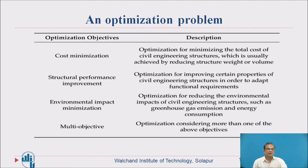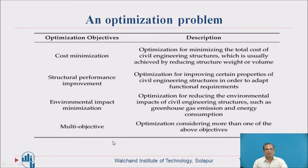There are different optimization objectives. Structural performance improvement is one more objective of optimization, under which optimization for improving certain properties of civil engineering structures is done. Environmental impact minimization is a third objective, under which optimization is done for reducing the environmental impacts of civil engineering structures such as greenhouse gas emission and energy consumption. Multi-objective optimization considers more than one of the above objectives simultaneously.